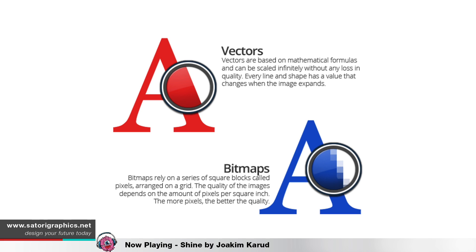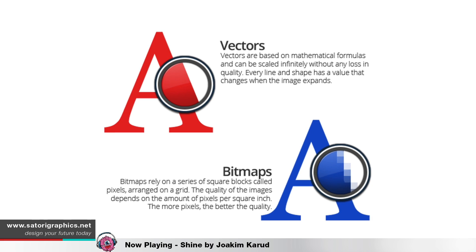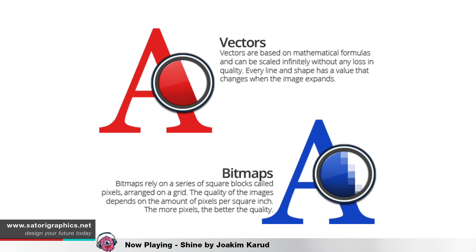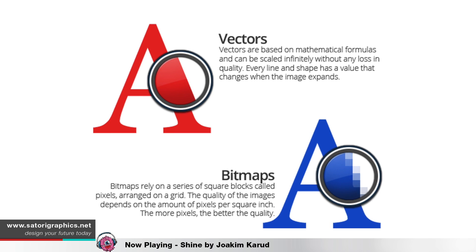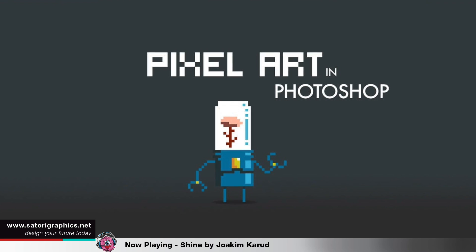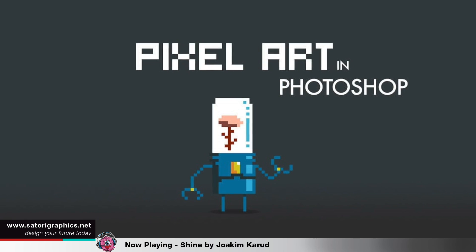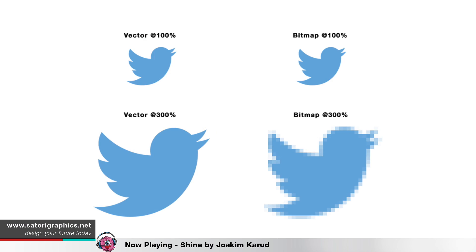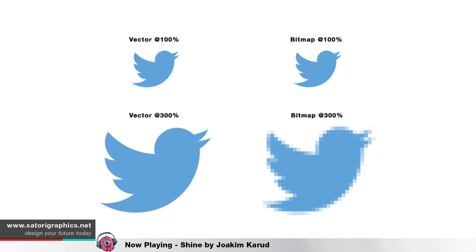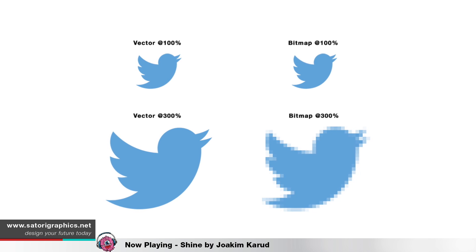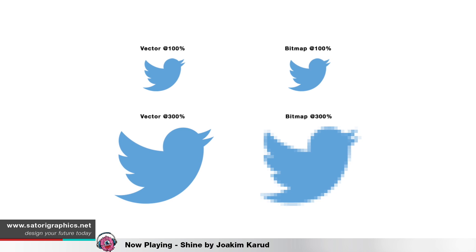Bitmap or raster images are stored as a series of tiny dots called pixels. Each pixel is actually a very small square that is assigned a colour and then arranged in a pattern to form the image. When you zoom in on bitmap images, you can see the individual pixels that make up each image. Bitmap graphics can be edited by erasing or changing the colour of individual pixels using programs such as Adobe Photoshop. Unlike bitmaps, vector images are not based on pixel patterns, but instead use mathematical formulas to draw lines and curves that can be combined to create an image from geometric shapes such as circles and polygons. Vector images are edited by manipulating those lines and curves using a program such as Adobe Illustrator.